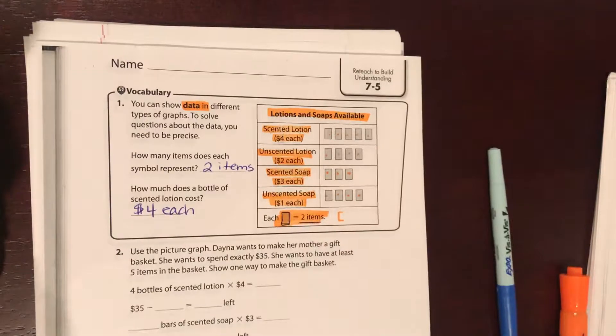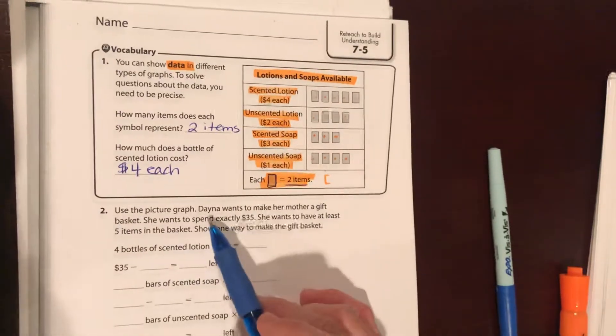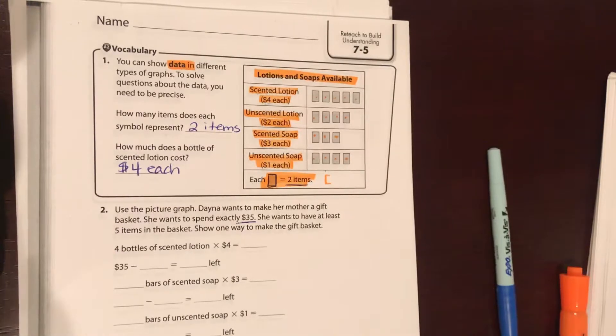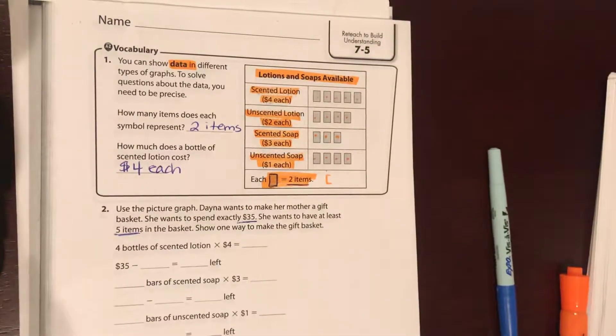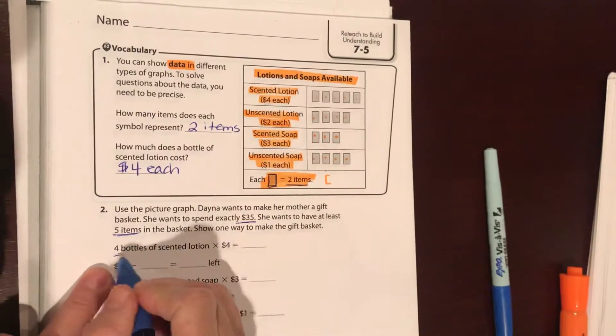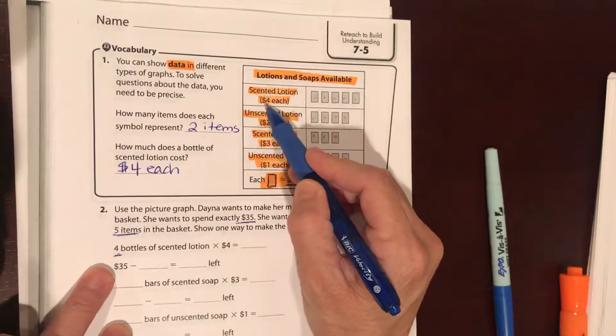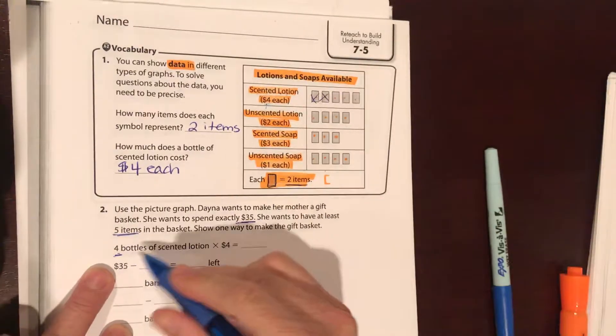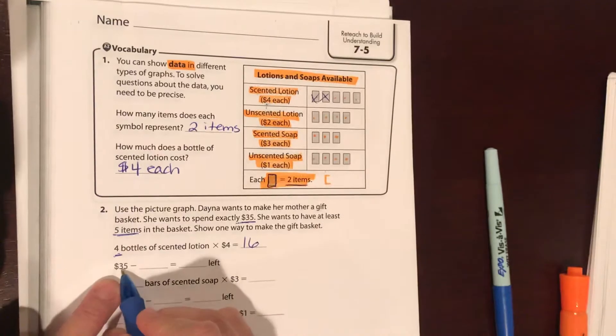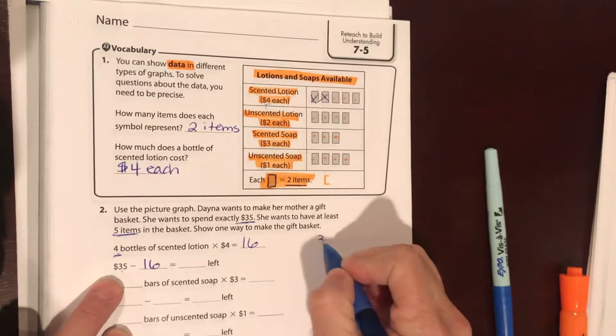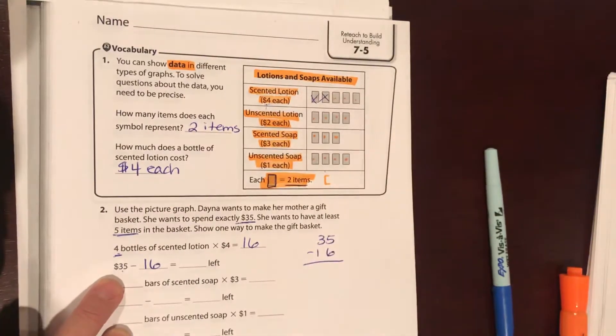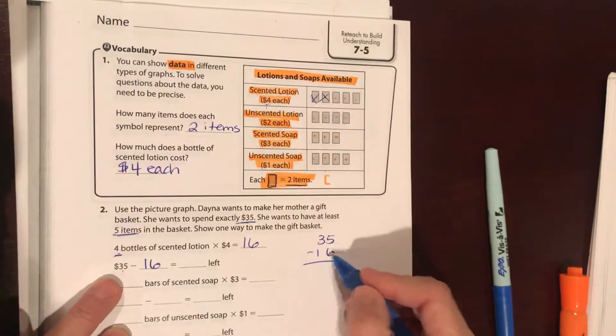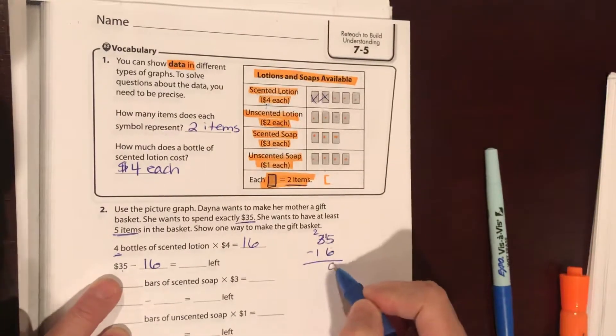Use the picture graph. Dana wants to make her mother a gift basket. She wants to spend exactly $35, she wants to have at least five items in the basket. Show one way to make it. If we buy four bottles of scented lotion, the scented lotions are four dollars each, that would be four times four, sixteen dollars. So we're going to start off with thirty-five dollars, we're going to subtract out the sixteen. Borrow from the top, need to go next door. Fifteen minus six is nine, two minus one is one, so we have nineteen dollars left over.